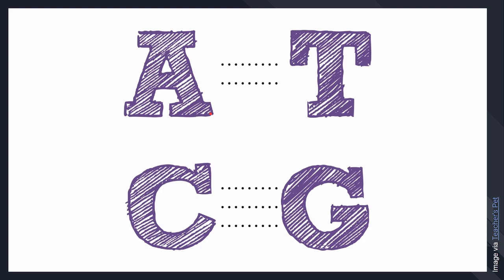Si adenine, lagi lang siyang pa-partner kay thymine. Si cytosine, lagi siyang pa-partner lang kay guanine. Yung T and A, made out of straight lines. And C and G are made out of curved lines. They are attracted to each other because of the hydrogen bonds that they form. Sa adenine and thymine, they form double bonds. And for cytosine and guanine, they form triple bonds.